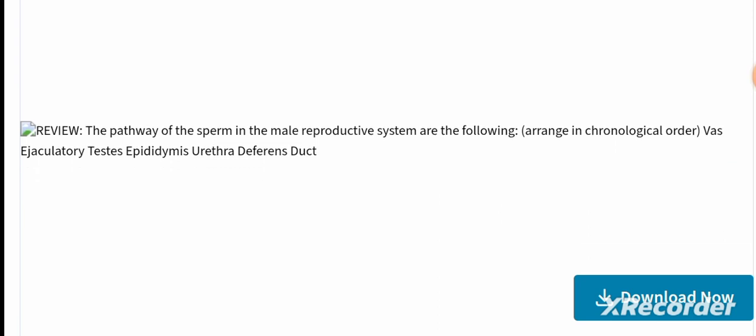The pathway of sperm through the male reproductive system, in chronological order, is: testes, epididymis, vas deferens, ejaculatory duct, and urethra.